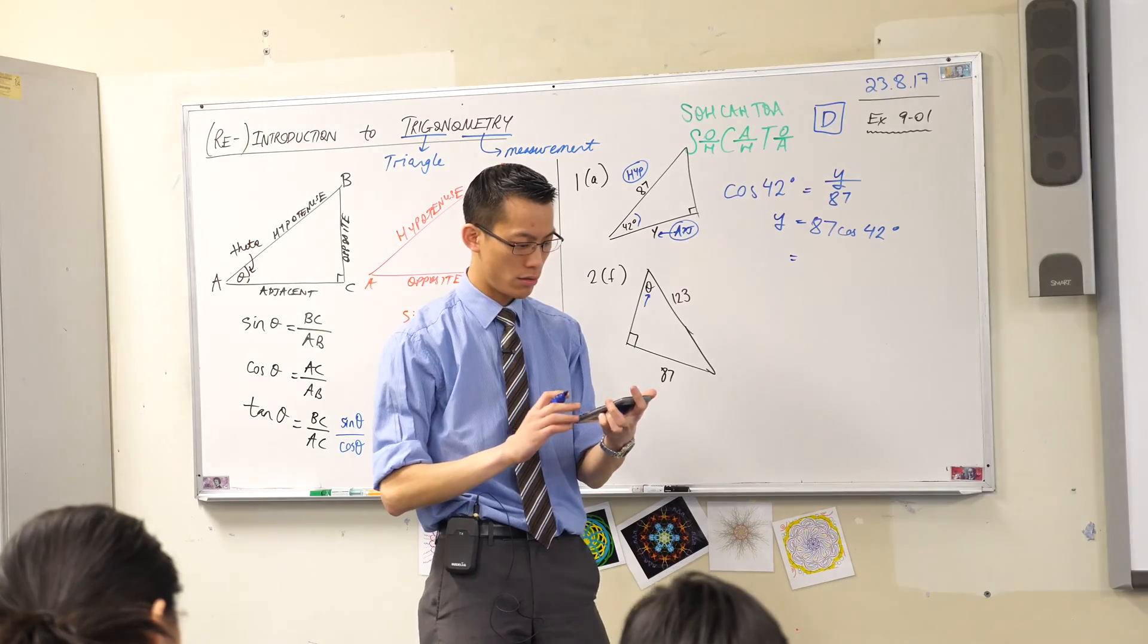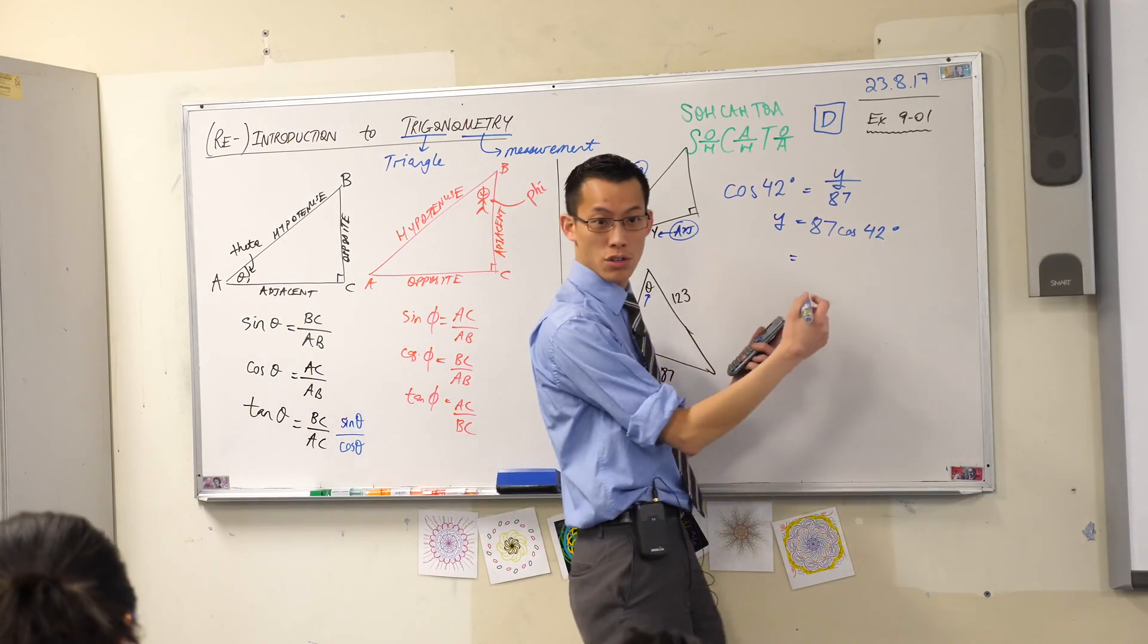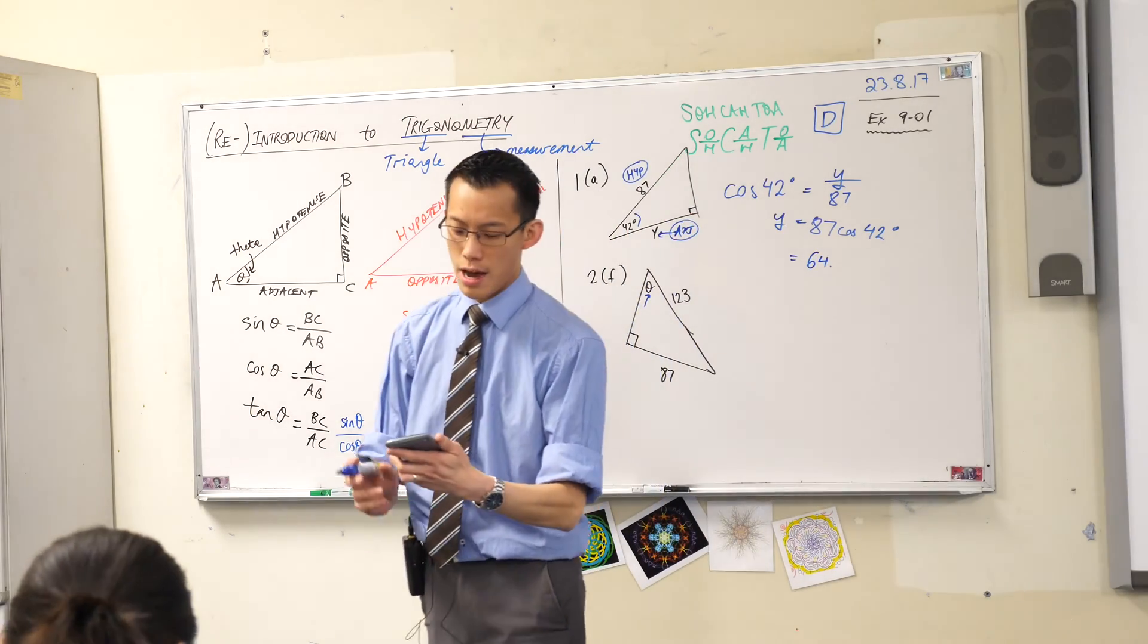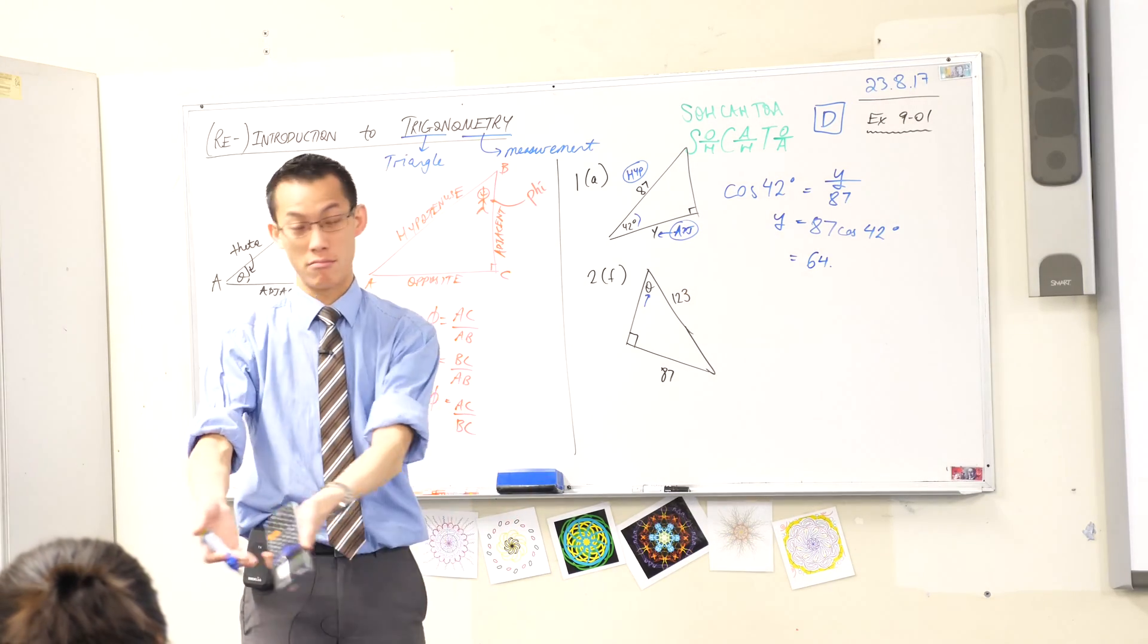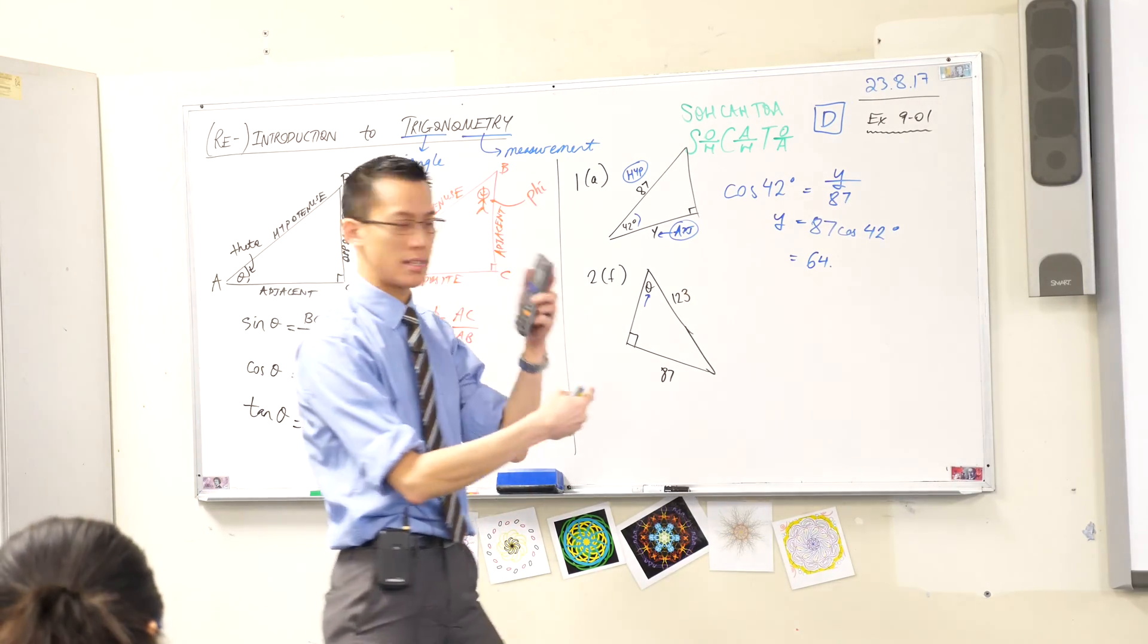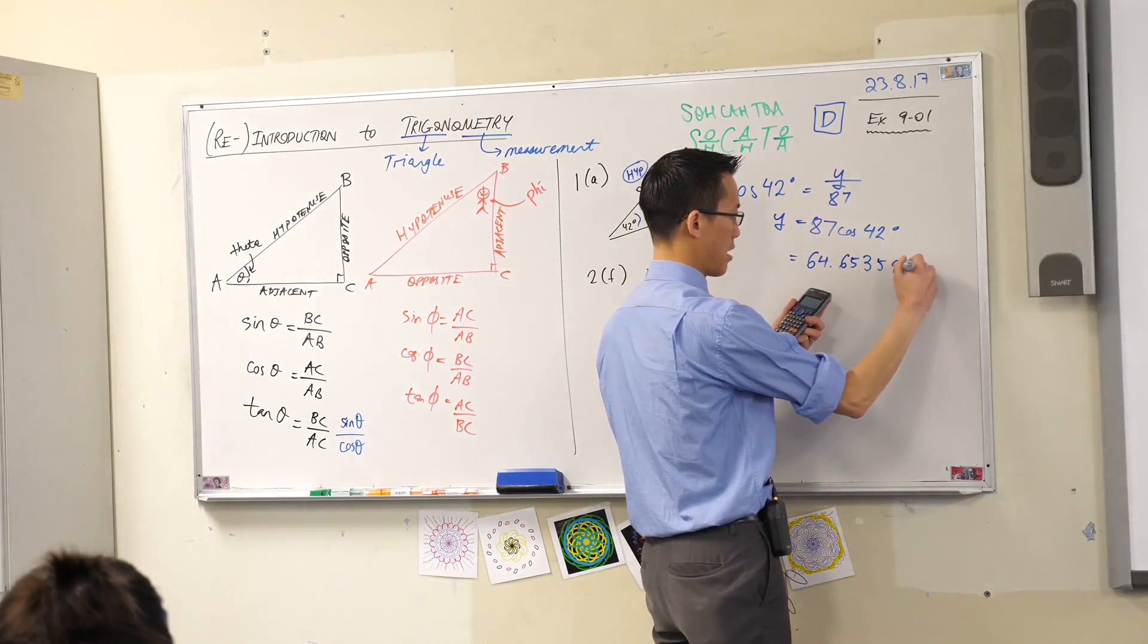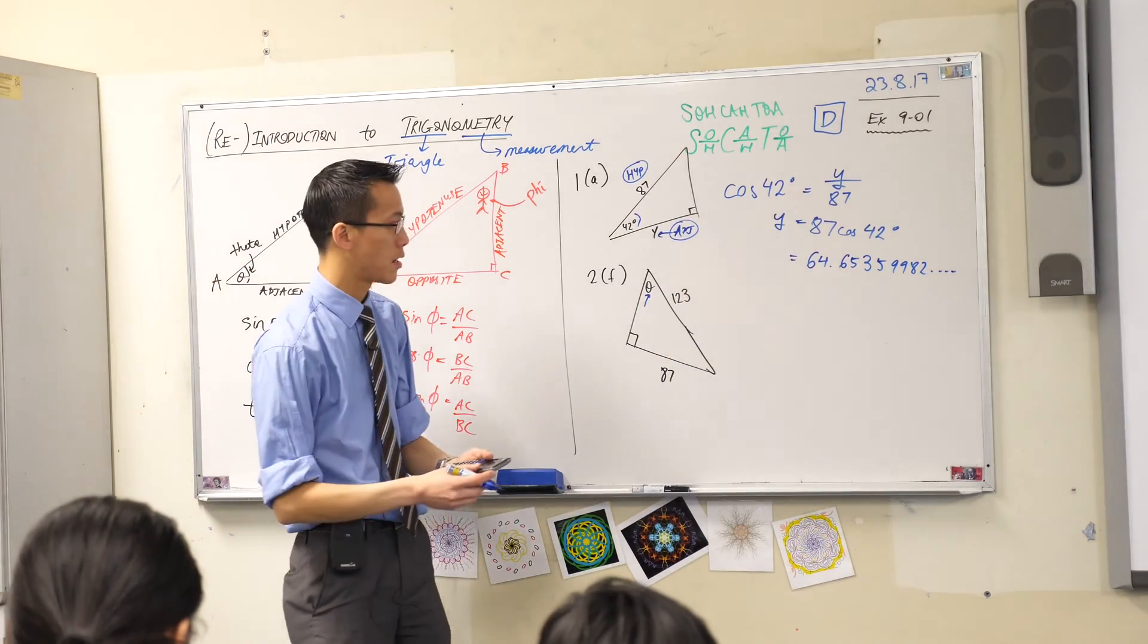87 cos 42. So I have 64 point - is this the same number as you? 64 point. Now I'm going to encourage you, especially in an exam, but the way that you get into the right habit for an exam is to do it now: to write as many decimal places as you can see there. Just write them all: 6, 5, 3, 5, 9, 9, 8, 2. That's not where they end, but it's where your calculator stops.